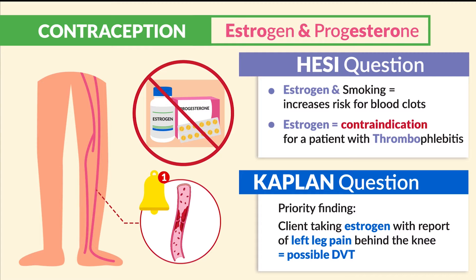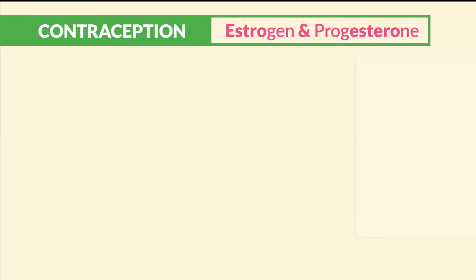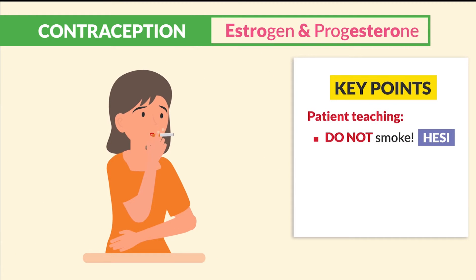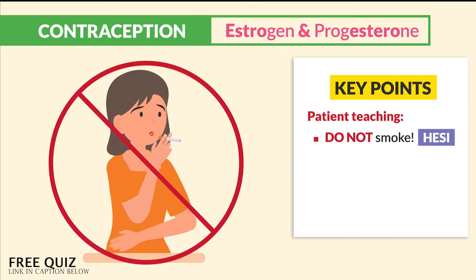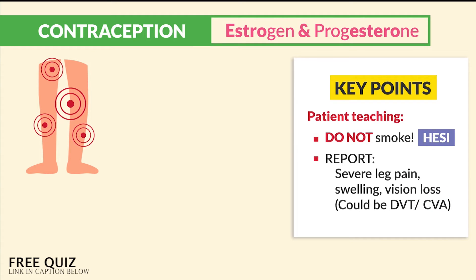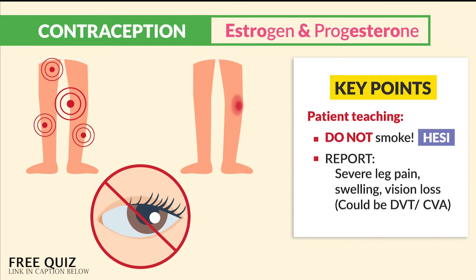Kaplan mentioned a priority finding is a client taking estrogen with reported left leg pain behind the knee — reported as possible DVT. For the key points here: big thing is patient teaching. We teach our patients do not smoke, and we report severe leg pain, swelling, as well as vision loss. This could indicate a DVT or even a CVA — that stroke.